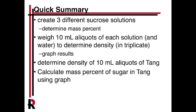In this lab, you're going to be looking at sucrose solutions — good old table sugar. You're going to make different sucrose solutions that have different amounts of sucrose in them, and we'll calculate the mass percentage — how much sucrose is in the solution on a mass basis. That'll involve a lot of balance use. After you make those solutions, we'll weigh 10 mL aliquots of each, including water, to determine density in triplicate. This will allow us to relate mass percent versus density and generate a nice graph.